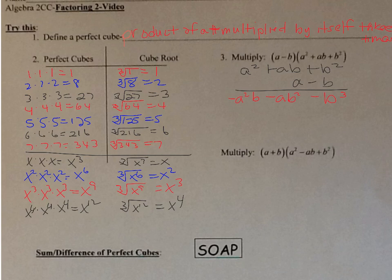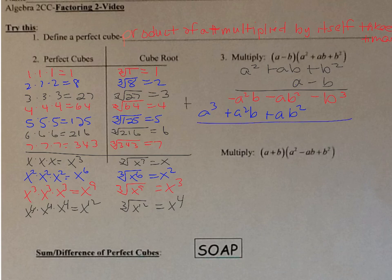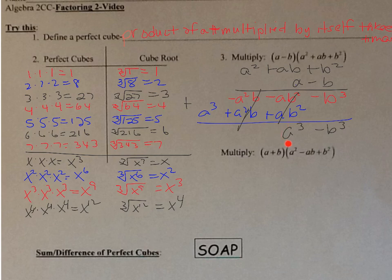Now multiplying by a: a×b²=+ab², a×ab=+a²b, a×a²=a³. Adding down: −ab²+ab²=0, −a²b+a²b=0, leaving −b³ and +a³. So the product is a³−b³, called the difference of perfect cubes because it's a subtraction.